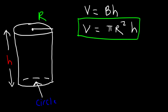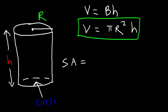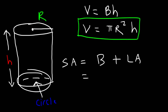Now what about the surface area of a cylinder? The surface area is going to be the area of the base — which is the top circle and the bottom circle — plus the lateral area. So it's b plus LA. The area of the base: we know the area of a circle is pi r squared, but we have the bottom circle and the top circle, so it's going to be 2 pi r squared.